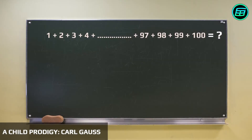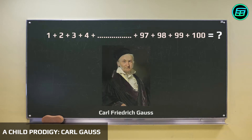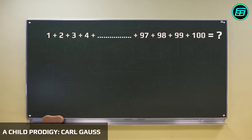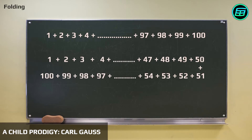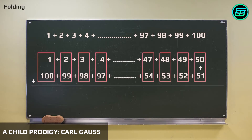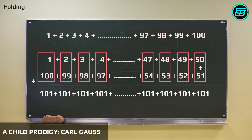Can you solve this question in one minute? Karl Gauss did when he was in primary school. Some researchers think Gauss simplified the series like this: if we sum the numbers vertically, we end up with the same result, 101. Since there are 50 sums, the result is 101 times 50, or 5050.